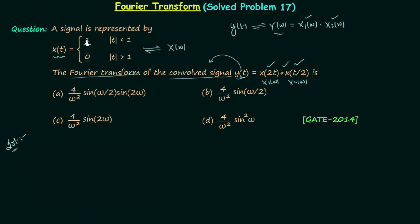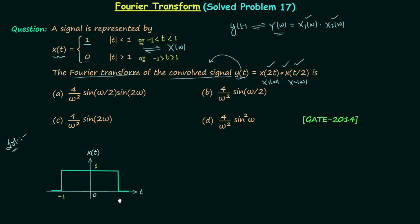Signal x(t) = 1 when |t| < 1, or equivalently when t is between −1 and +1. It is equal to 0 when |t| > 1, i.e., when t > 1 or t < −1. From this definition it is clear that x(t) is a rectangular function: it equals 1 from −1 to +1, and 0 from −∞ to −1 and from 1 to +∞.